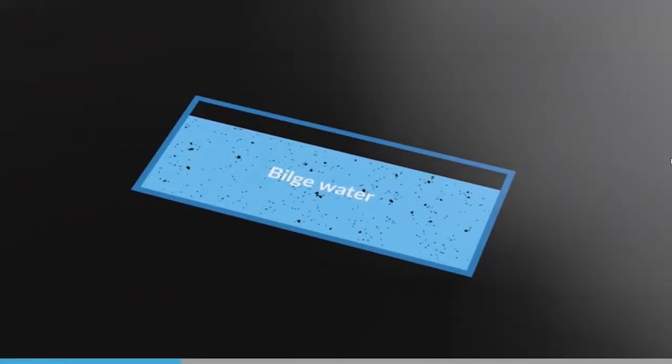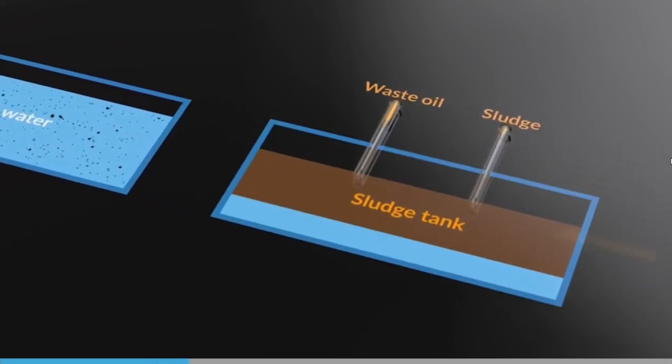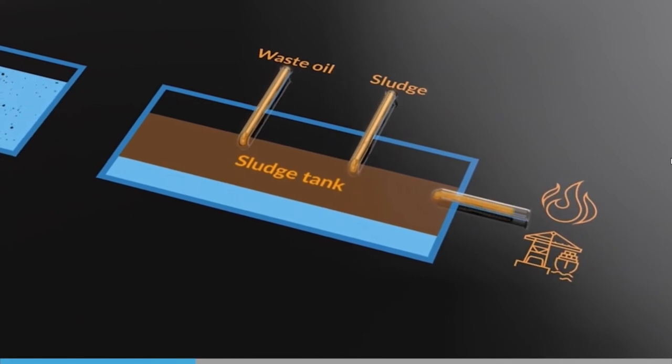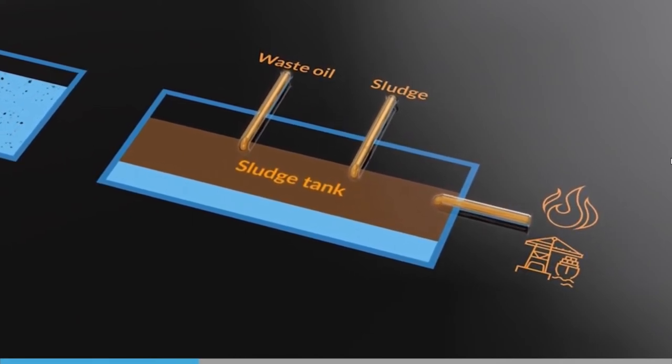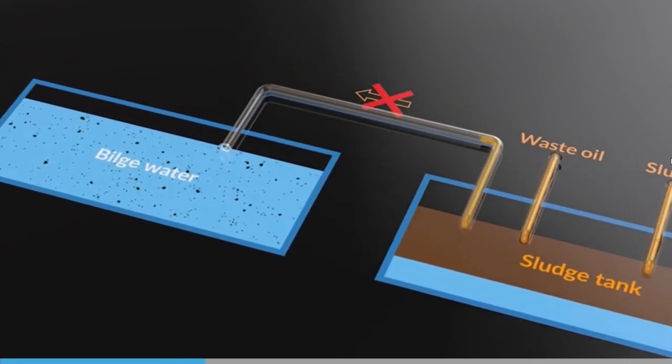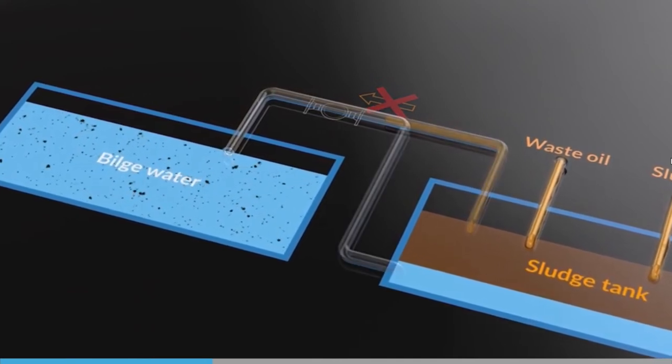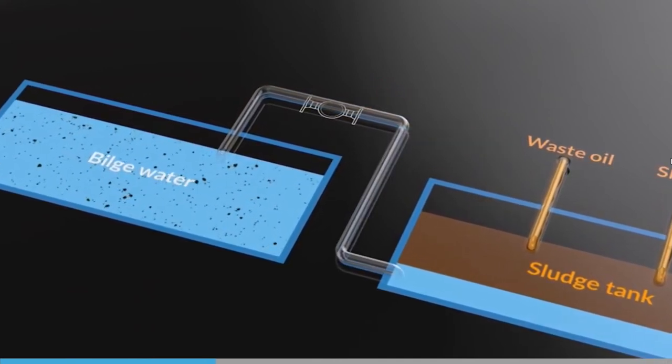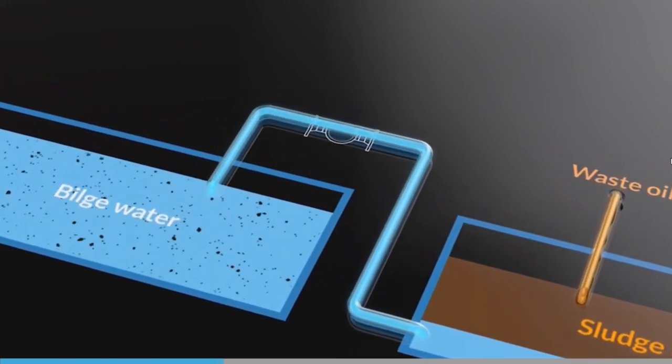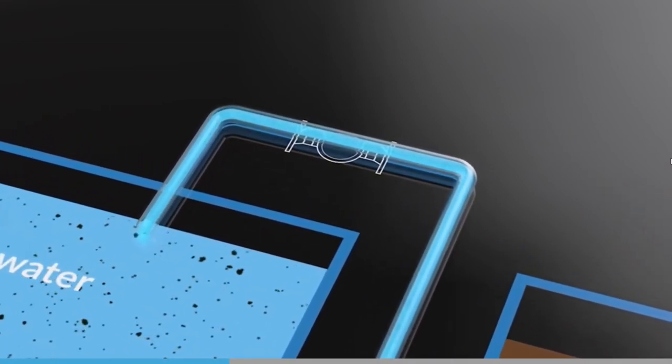First of all, the bilge holding tank is for bilge water. Waste oil or sludge should go to the sludge tank, from where it can either be burned in an incinerator or discharged to shore reception facilities. The piping arrangements should be such that if we are transferring sludge, it cannot end up in the bilge separator tank. There may be some provision to strip water from the bottom of the sludge tank to the bilge tank, but this must be via an open hopper or sight glass so that we can see that it is actually water.